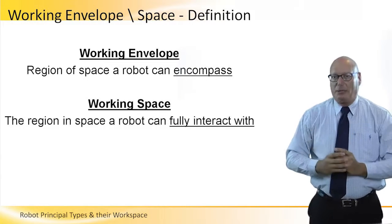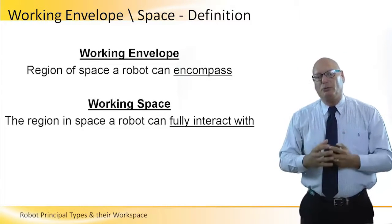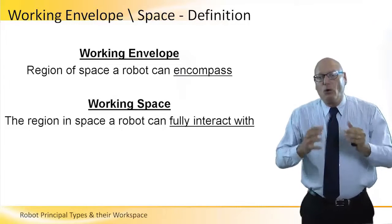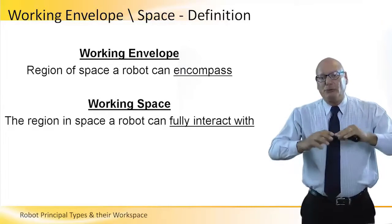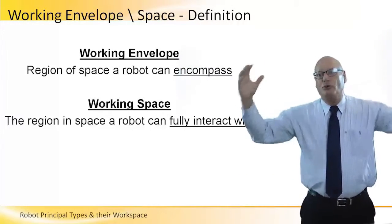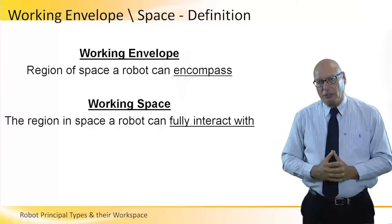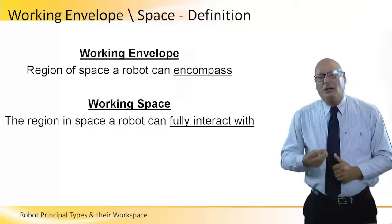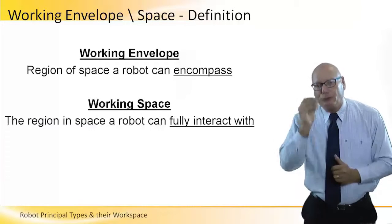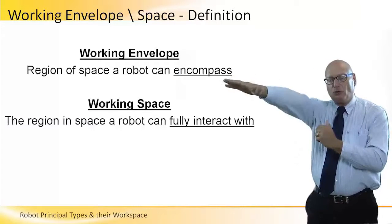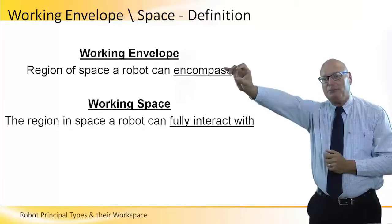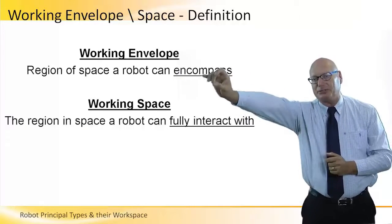Here is the presentation of the difference between what we call the working envelope and working space. A working envelope is the region of space a robot can encompass — consider it the theoretical envelope. Working space, as opposed to working envelope, is the region in space a robot can fully interact with. The fact that a robot can go up to a particular point doesn't mean it can be fully interacted with at that point.